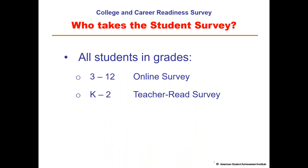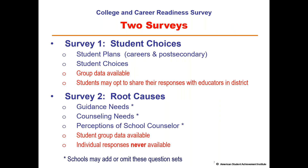Let's begin with the overview. The survey is designed for all students in grades K through 12. Students in grades 3 through 12 take an online survey, while students in grades K–2 take a teacher-read survey. The survey is actually two surveys. The first covers student choices — asking students about their plans for the future, both career plans and post-secondary plans, as well as choices made during the school year related to areas that impact student achievement. Group data is available, and students may opt to share their individual responses with educators in the district to receive individualized guidance.